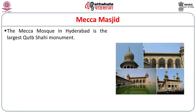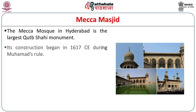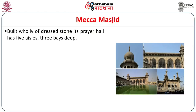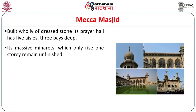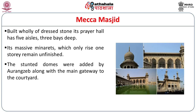Makkah Masjid, located very close to Charminar, is also the largest Qutub Shahi monument. Its construction began in 1617 during Muhammad's rule but was completed in 1693 CE — taking about 80 years to complete. Built wholly of dressed stone, its prayer hall has five aisles three bays deep. Its massive minarets only rise once and remain unfinished; the stunted domes were added by Aurangzeb along with the main gateway to the courtyard.